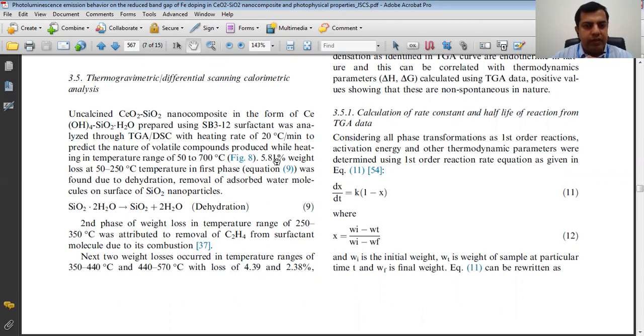In this way you can calculate the weight loss and identify which molecules are removing from the second phase and third phase. If there is 5.81% weight loss from 50 to 250 degrees centigrade, then there is removal of two water molecules. This process is called dehydration. The water molecules absorbed on the surface of silicon dioxide are being removed.